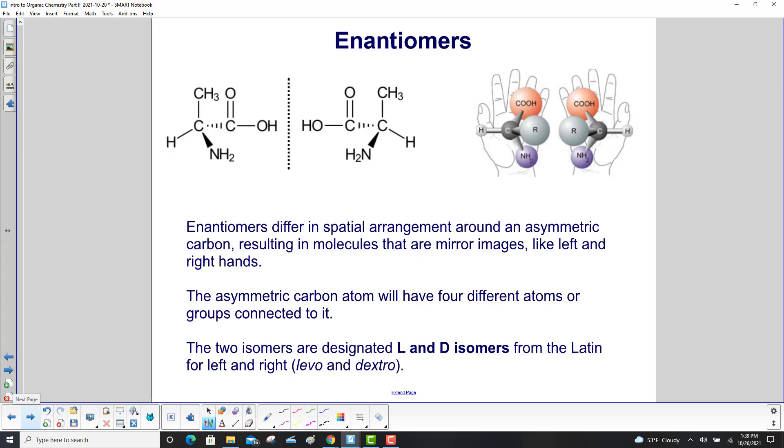Enantiomers differ in spatial arrangement around an asymmetric carbon resulting in molecules that are mirror images like left and right hands. The asymmetric carbon atom will have four different atoms or groups connected to it. The two isomers are designated L and D isomers from the Latin for left and right, levo and dextro.